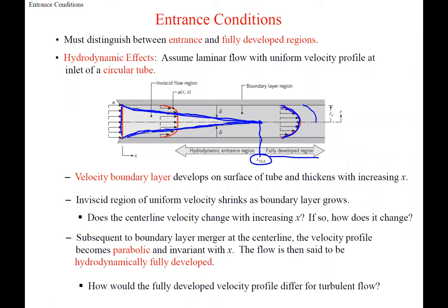Once that distance is reached, we don't have the entrance effects of the boundary layer growing and meeting anymore. We have a fully developed profile. The profile is a parabolic velocity profile for laminar flow. If we're at one point and then another, it's going to be the same velocity profile — it's not a function of X. So this is hydrodynamically fully developed, which deals with the velocity profile.